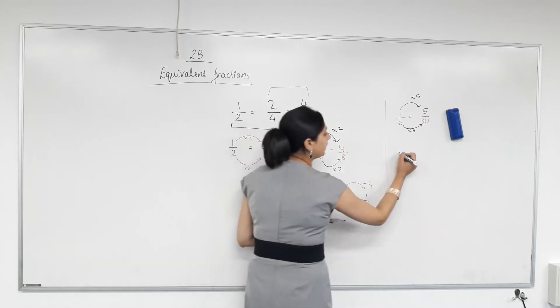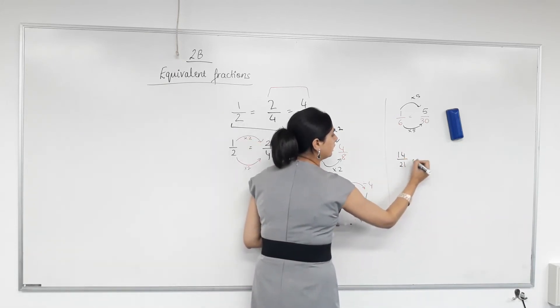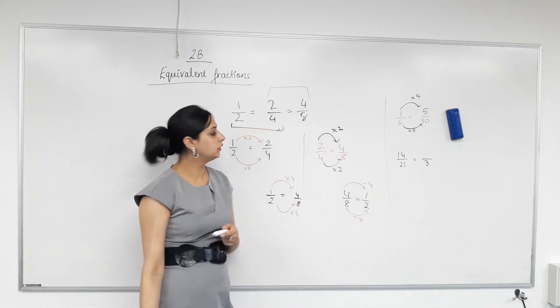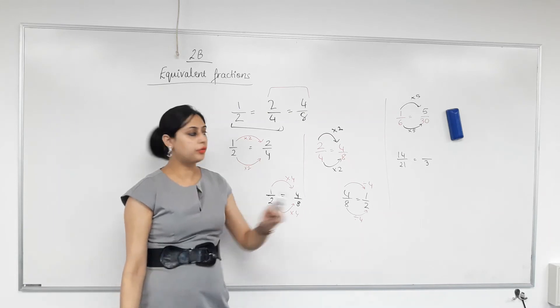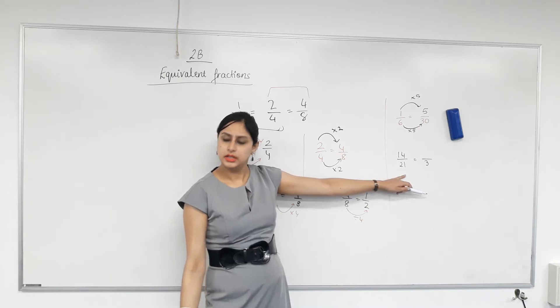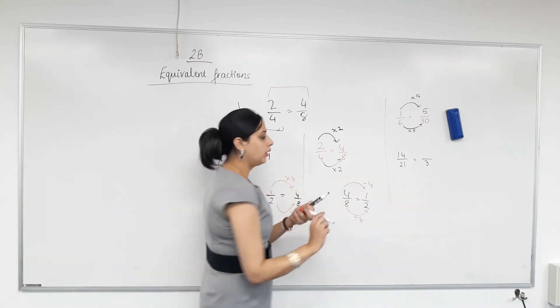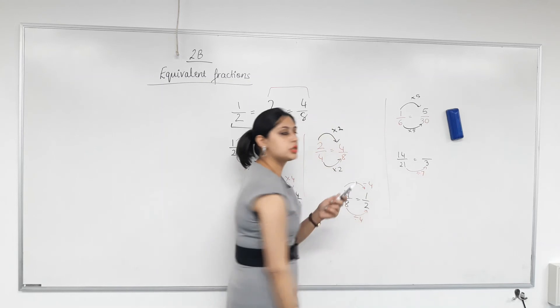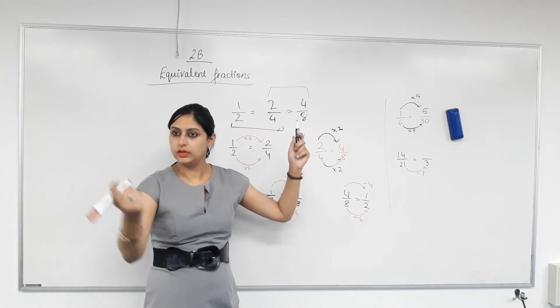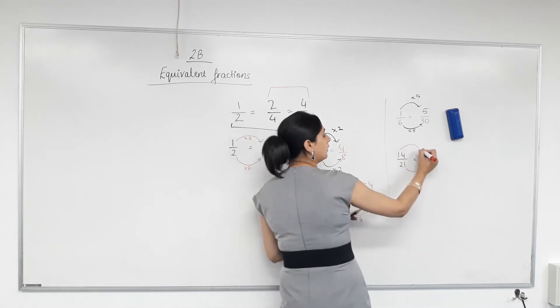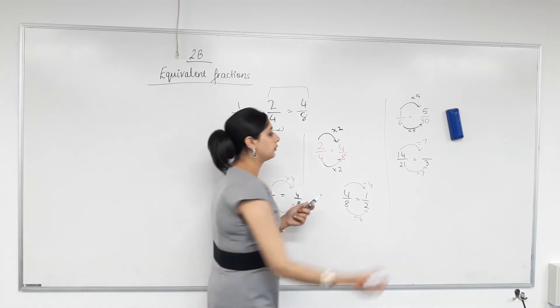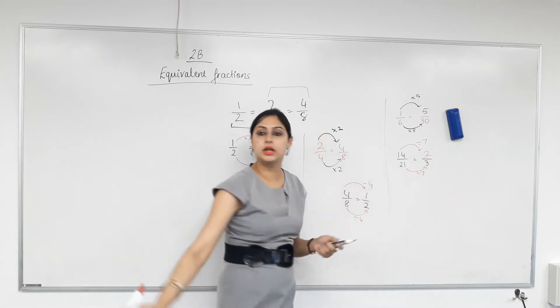Now let's say we have 14 over 21. From 21 we got a three. Have we divided 21 by something or multiplied? Divided. It's getting smaller. Is 21 divided by seven three? Yes. What must we do to the top? Just divide by seven. Well done. Same to the top. 14 divided by seven is two. That's it. Equivalent fractions.